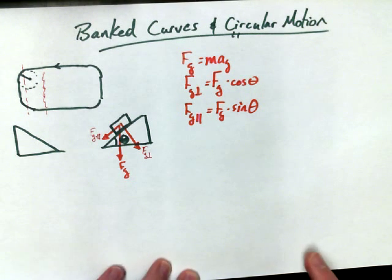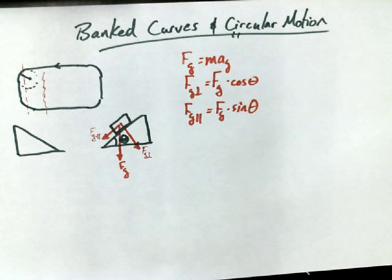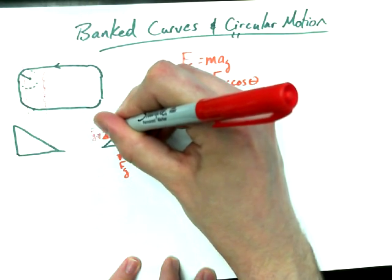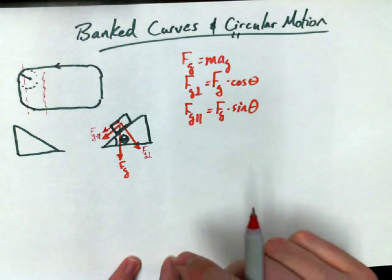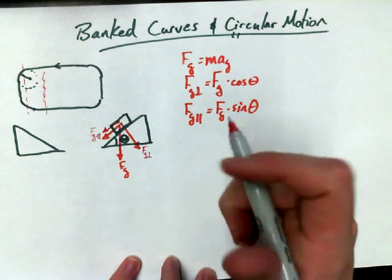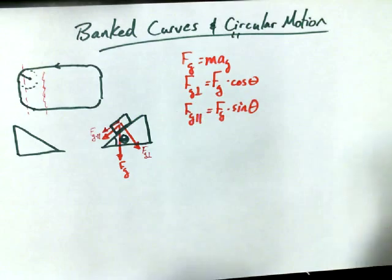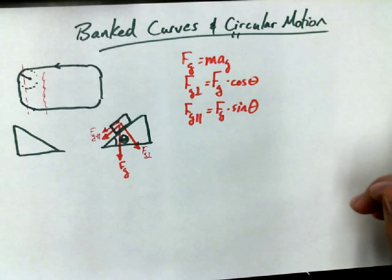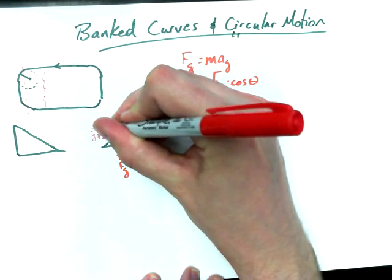And another force that's going to be present if we're talking about a car that's traveling in a circle is the static friction force. Previously with a flat track, the static friction force pointed towards the center of the circle, but this time the static friction force would point down the hill. In other words, the static friction force, the friction between the car and the banked track, is keeping the car from sliding sideways off the track and flying into the stands. And so I'm going to label it as static friction, Fs.